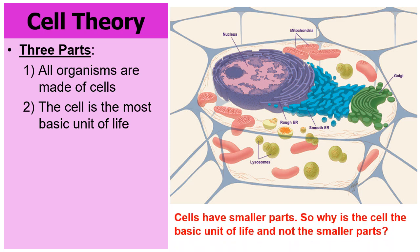The next part of the cell theory is that the cell is the most basic unit of life. When you look at this picture, you can see cells have smaller parts — mitochondria, nucleus, rough ER. So why is the cell the basic unit of life? The simple answer is the cell is the most basic unit because it's the smallest part that can still carry on the processes of life. Lysosomes cannot function on their own, neither can rough ERs and smooth ERs. But the cell can.